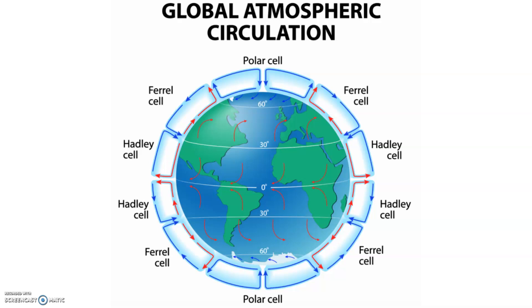And then the Ferrel cell kind of acts as like a gear between the two, transferring cold air from the top and then warm air from the equator and rotating it back and forth.